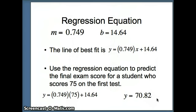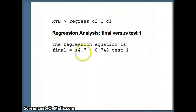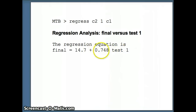We can use the regression equation to make predictions about the dependent variable by looking at the independent variable. We can also check this on Minitab using the command 'regress c2 on 1 c1', which gives us the regression equation: final equals 14.7 plus .748 times test 1. Here .748 is the slope and 14.7 is the y-intercept of that regression line. That concludes this presentation.